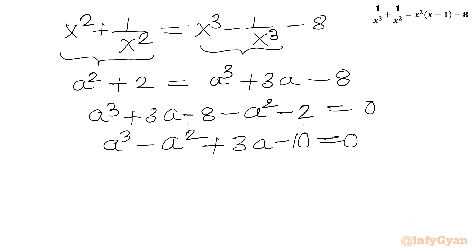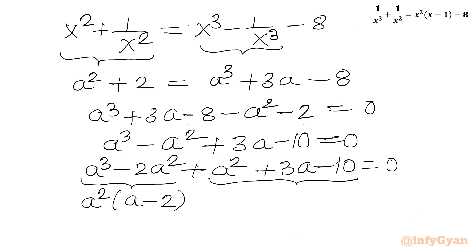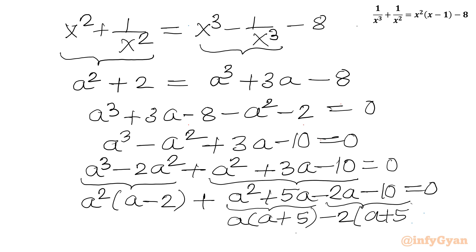This is a cubic equation. I will use the method of factorization to solve it. I can write minus A squared as minus 2A squared plus A squared, then regroup: A squared times A minus 2, plus the remaining terms. Splitting 3A as 5A minus 2A gives A squared plus 5A minus 2A minus 10 equal to 0. Taking A common from the first two terms gives A times A plus 5, and taking minus 2 common from the last two gives minus 2 times A plus 5, so A plus 5 is an overall common factor.